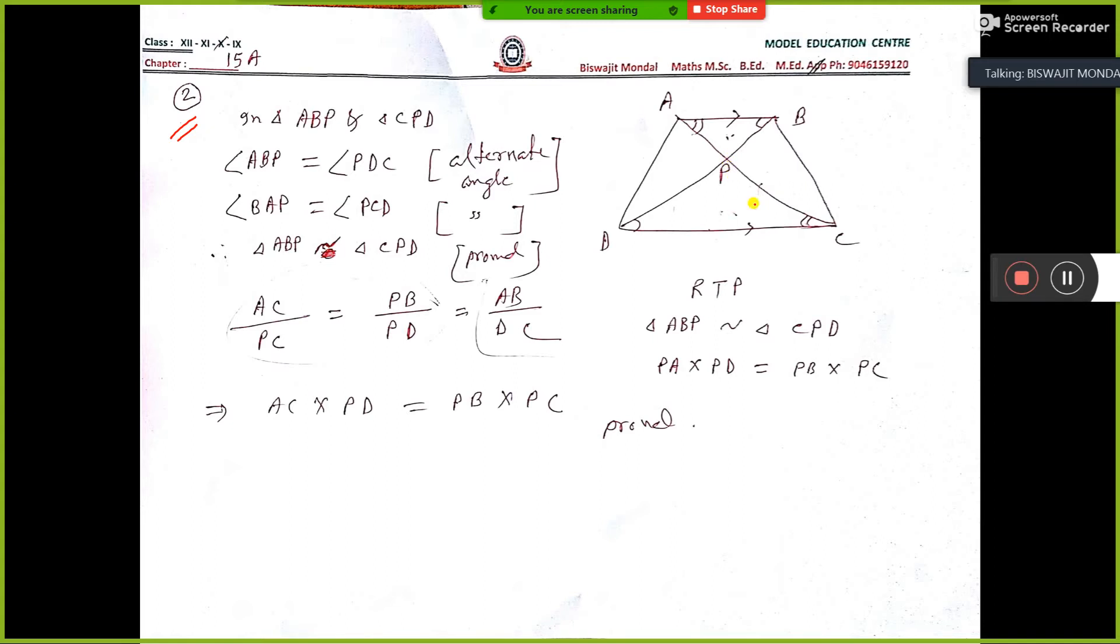Prove that ABP is similar to PDC or CPD and PA into PD is equal to PB into PC. This is RTP. RTP is required to prove these two.